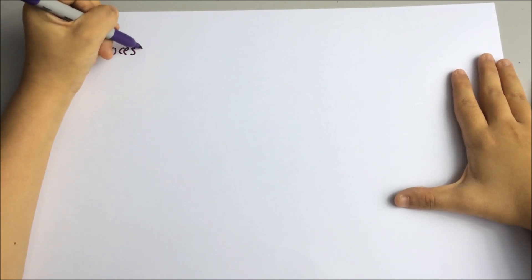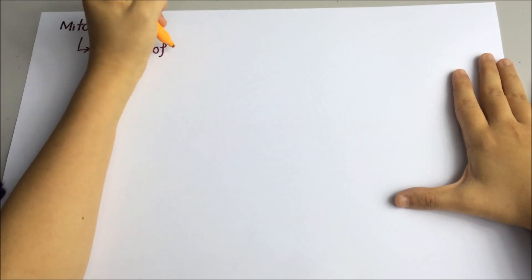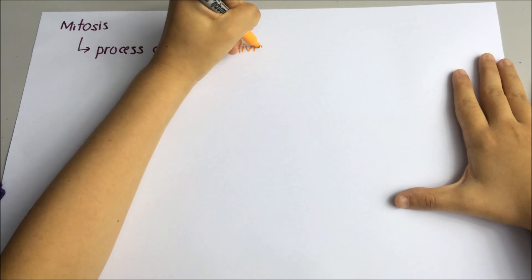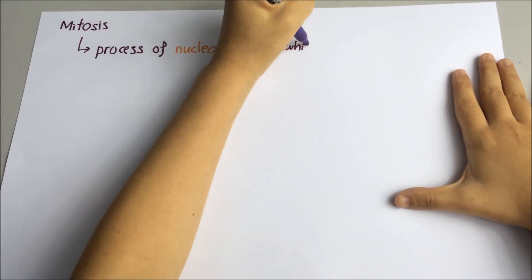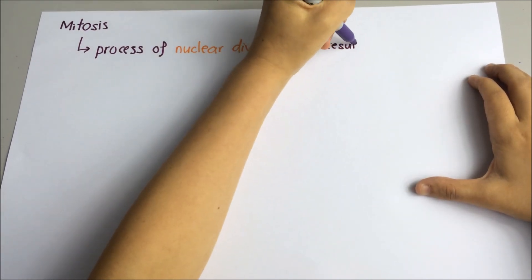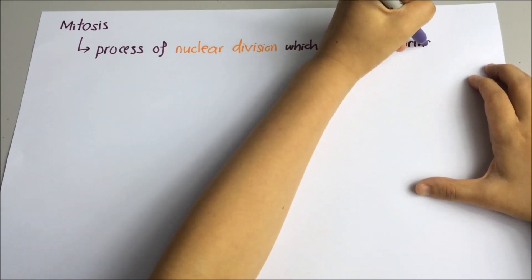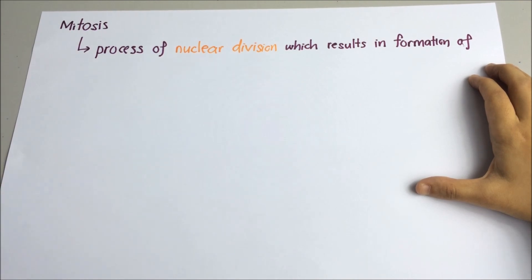Mitosis is defined as a process of nuclear division which results in formation of two genetically identical daughter nuclei.